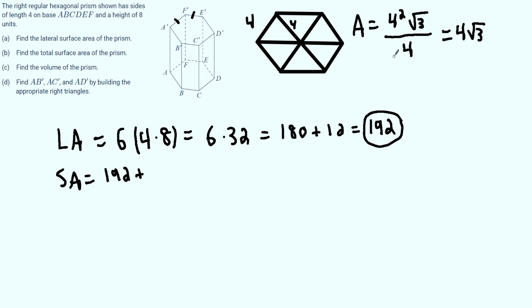Now we need the area of the hexagon. Well the hexagon, since there are six triangles, it's going to be 6 times 4 times the square root of 3.